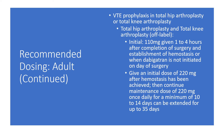For VTE prophylaxis in total hip and knee arthroplasty: the initial dose is 110 mg given 1–4 hours after completion of surgery and establishment of hemostasis, or if dabigatran is not initiated on the day of surgery, give an initial dose of 220 mg after hemostasis is achieved. Then continue the maintenance dose of 220 mg once daily for a minimum of 10 to 14 days, which can extend up to 35 days.